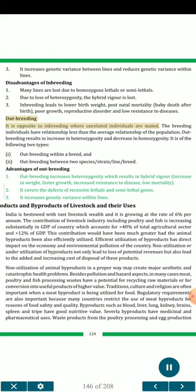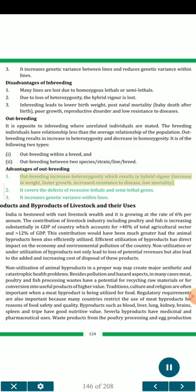Outbreeding is opposite to inbreeding where unrelated individuals are mated. The breeding individuals have relationship less than the average relationship of the population. Outbreeding results in increase in heterozygosity and decrease in homozygosity. It is of two types: outbreeding within a breed, and outbreeding between two species, strain, line, or breed. Advantages of outbreeding: 1. Outbreeding increases heterozygosity which results in hybrid vigor, increase in weight, faster growth, increased resistance to disease, and low mortality. 2. It covers the defects of recessive lethals and semi-lethal genes. 3. It increases genetic variance within lines.